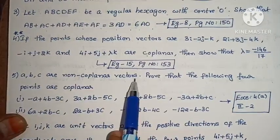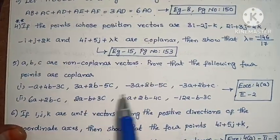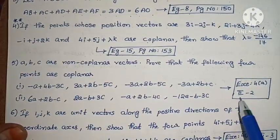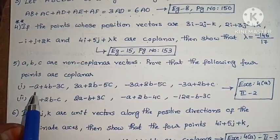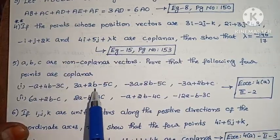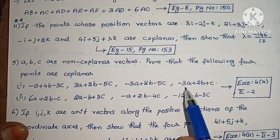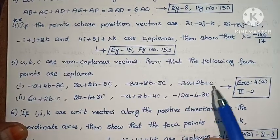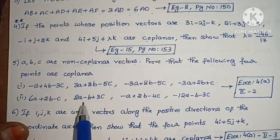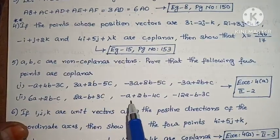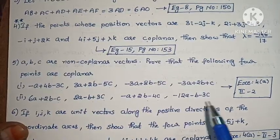Next: A, B, C are non-coplanar vectors. Prove that the following 4 points are coplanar. Exercise 4A, second exercise, problem 2 — with subproblems. First subproblem: minus A + 4B minus 3C, 3A + 2B minus 5C, minus 3A + 8B minus 5C, minus 3A + 2B + C. Second subproblem: 6A + 2B minus C, 2A minus B + 3C, minus A + 2B minus 4C, minus 12A minus B minus 3C.